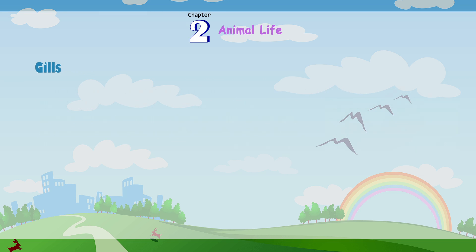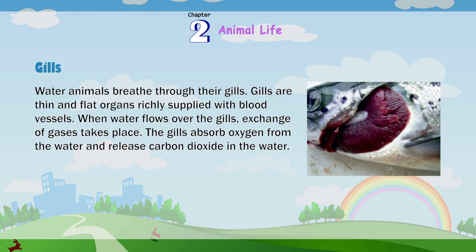Gills. Water animals breathe through their gills. Gills are thin and flat organs, richly supplied with blood vessels. When water flows over the gills, exchange of gases takes place. The gills absorb oxygen from the water and release carbon dioxide into the water.